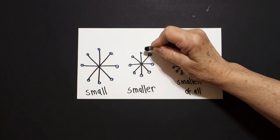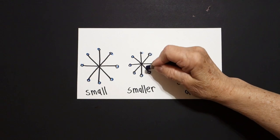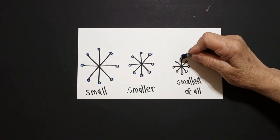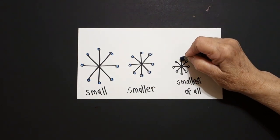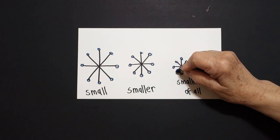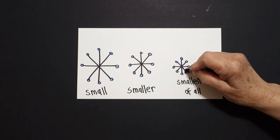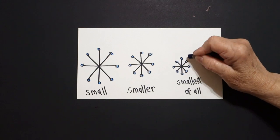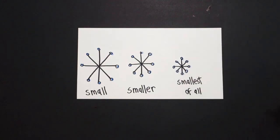And finally the smallest of all. These are superlative adjectives. There we go describing. Okay, let's see what this looks like all colored in.